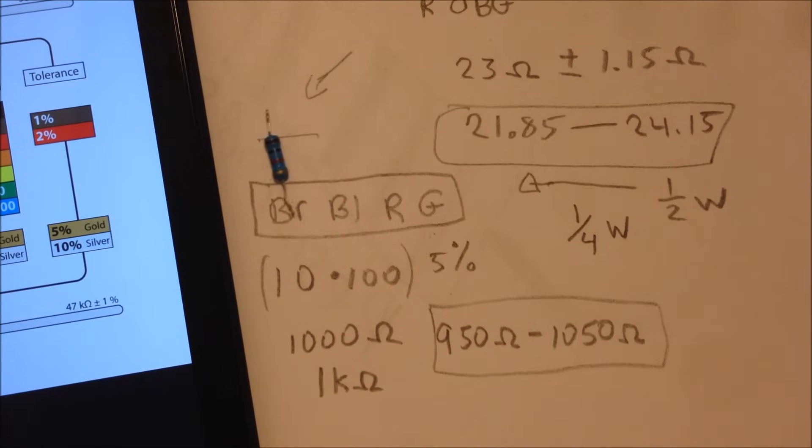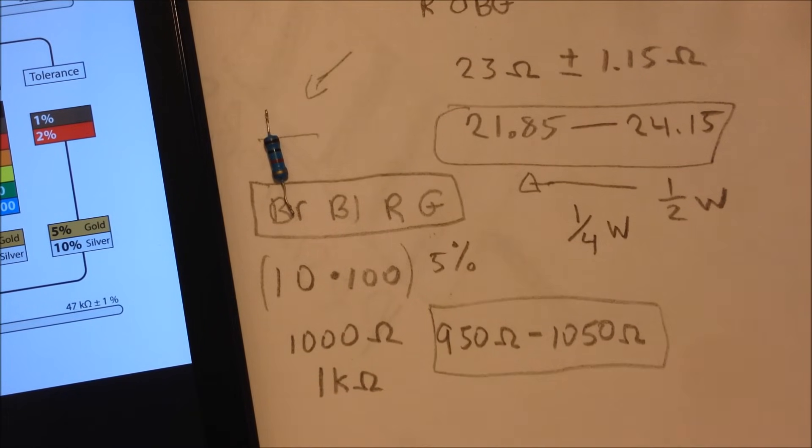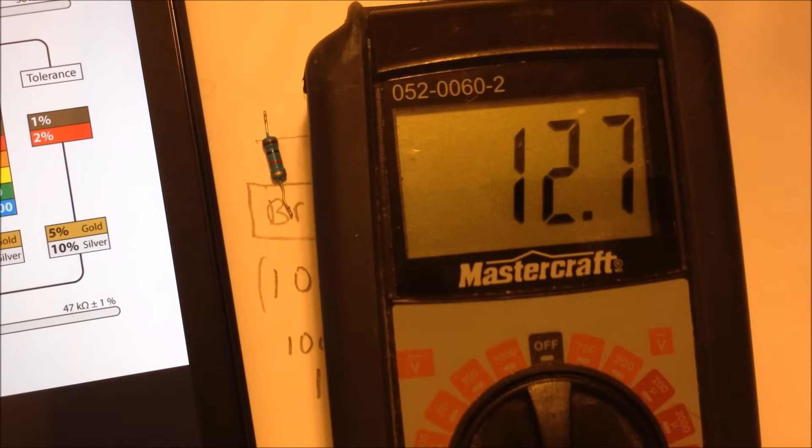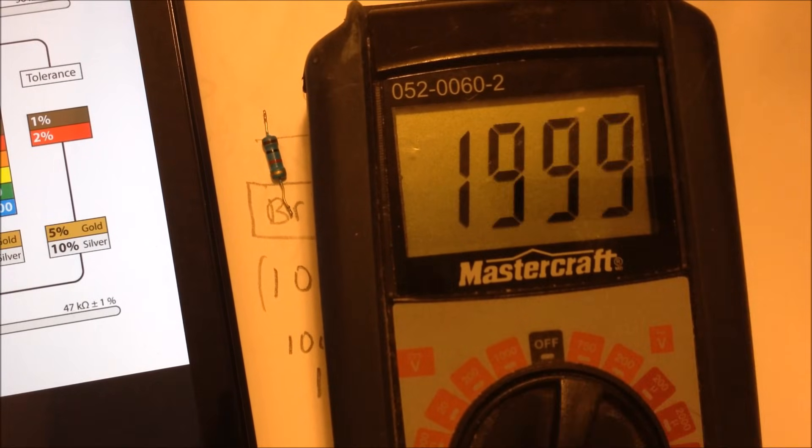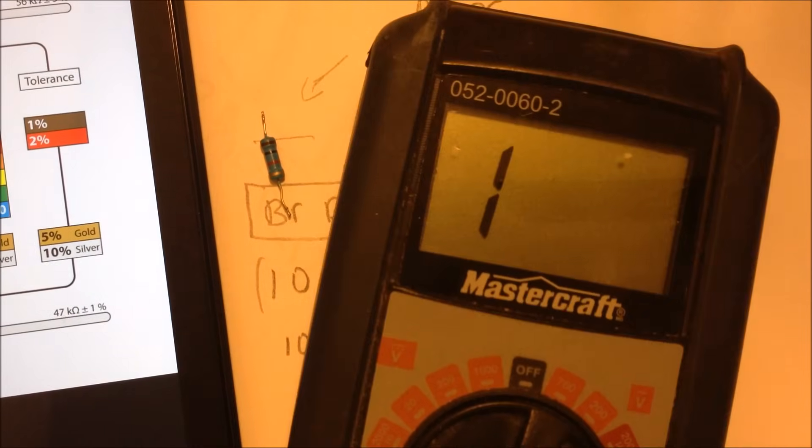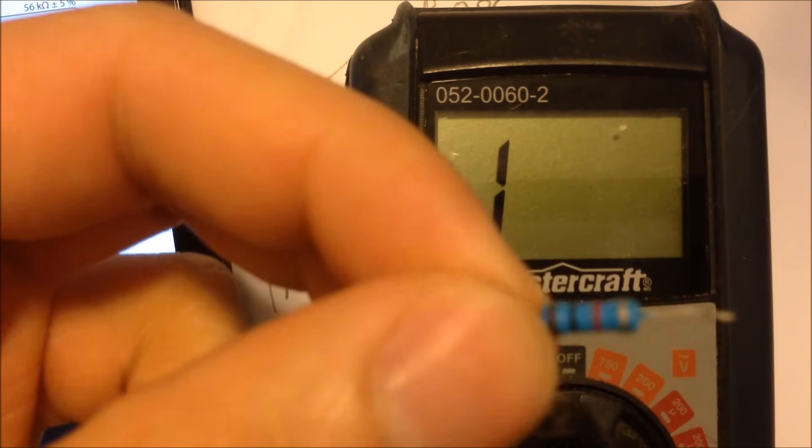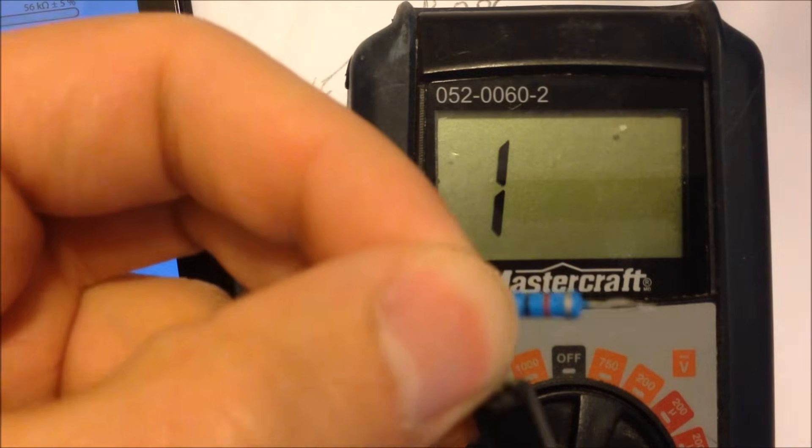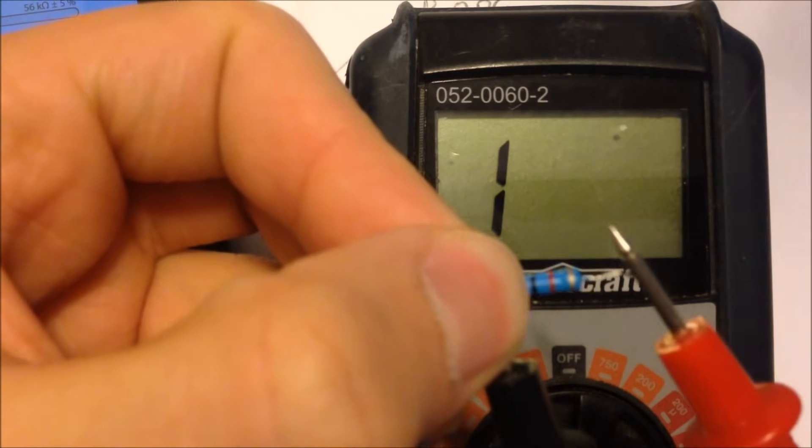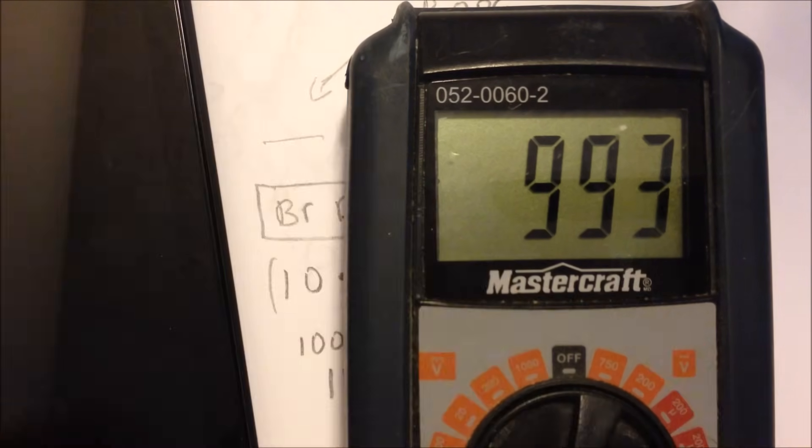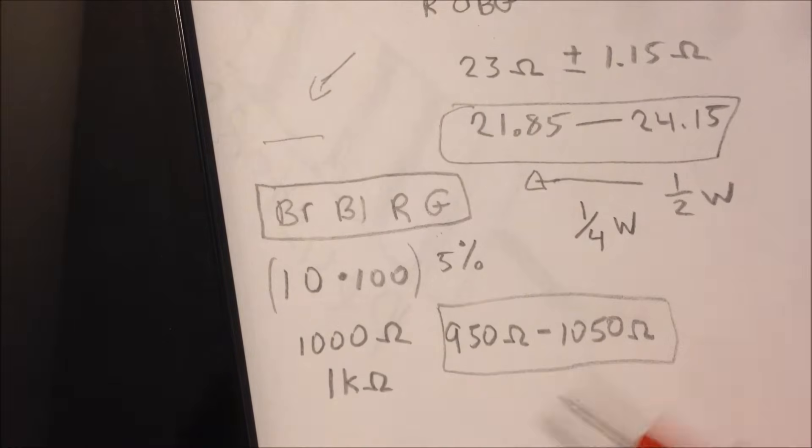And we'll quickly confirm that with the multimeter again. So I'll set this to the 2,000 range, and I'll take this resistor, one lead there on one side, and the other lead here, and we get 993 ohms, which is in our range.